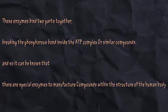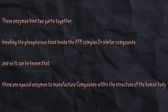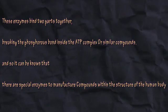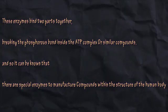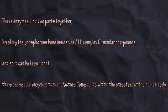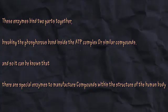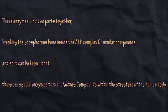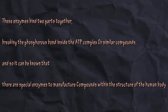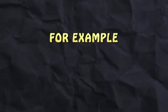The sixth type is Ligases and Synthetases. These enzymes bind two parts together, breaking the phosphorous bond inside the ATP complex or similar compounds. There are special enzymes to manufacture compounds within the structure of the human body.